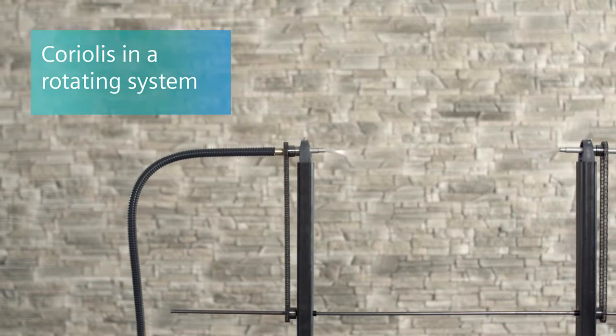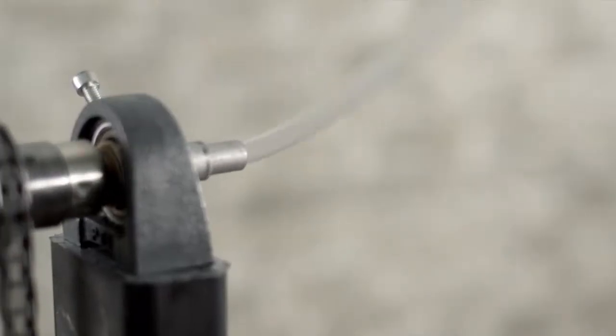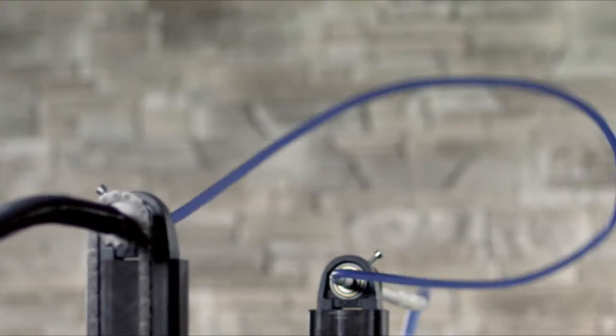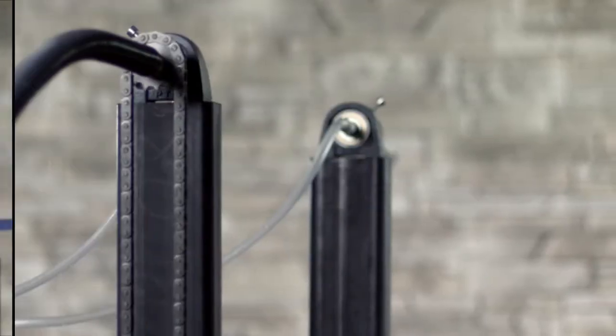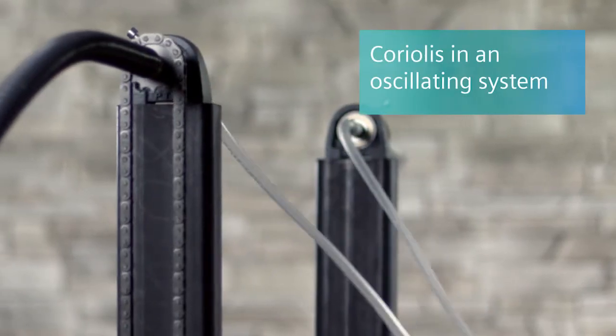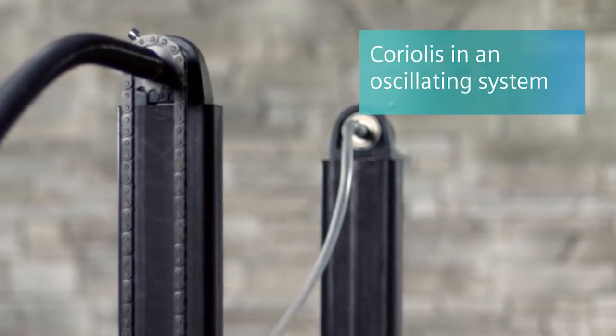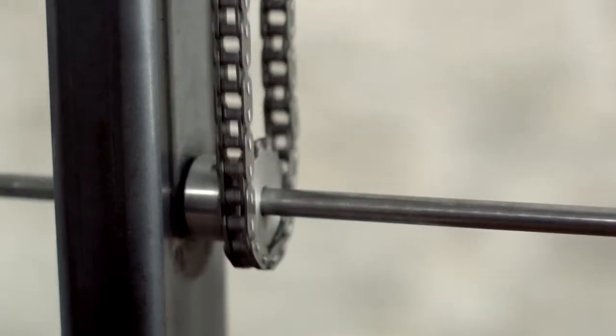The same effect occurs with a water hose that rotates around its own axis like a skipping rope. As soon as water flows through, the hose also twists. The effect also appears with an oscillating movement. The twisting is stronger or weaker depending on the amount of water flowing through the hose.